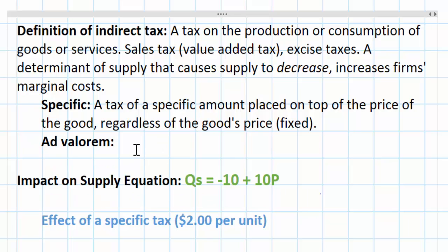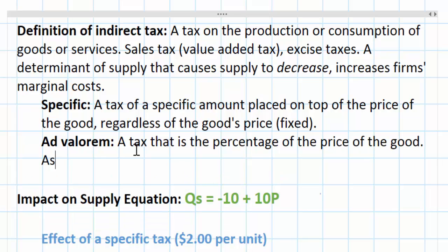An ad valorem tax, on the other hand, is probably the one you're more familiar with. It is a percentage of the price of the good. In other words, as the good's price increases, the amount of tax increases.